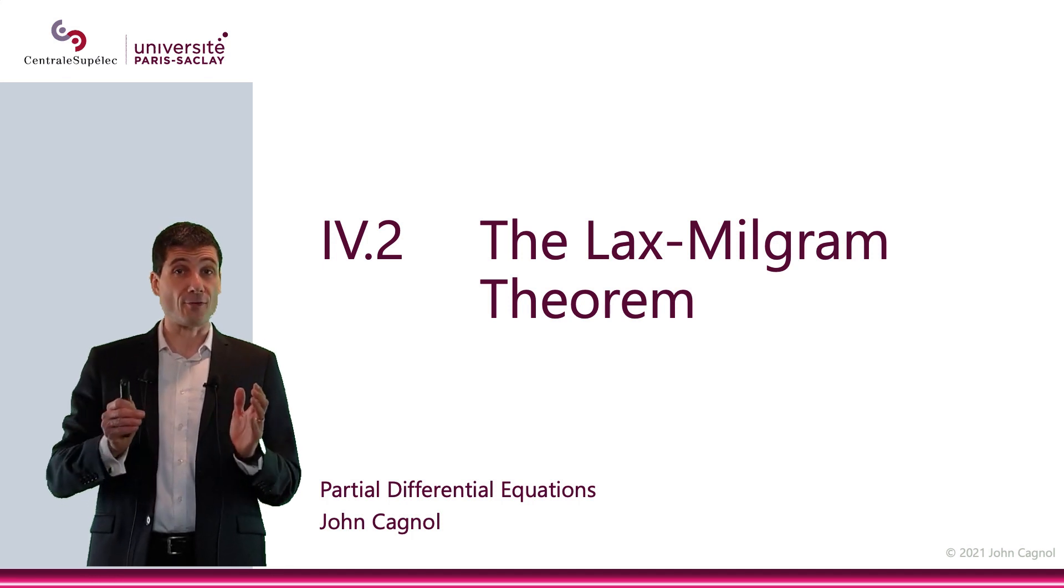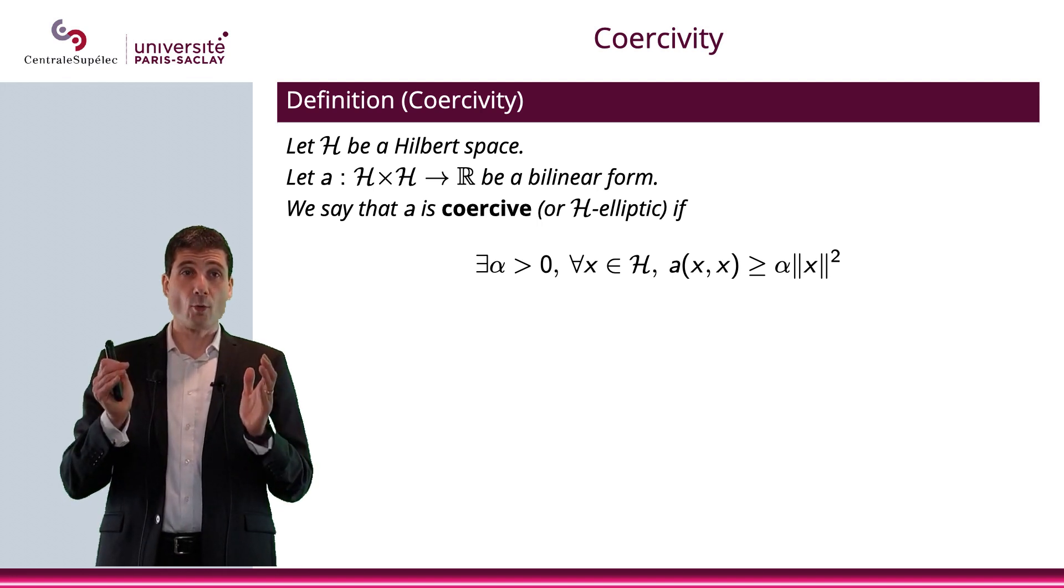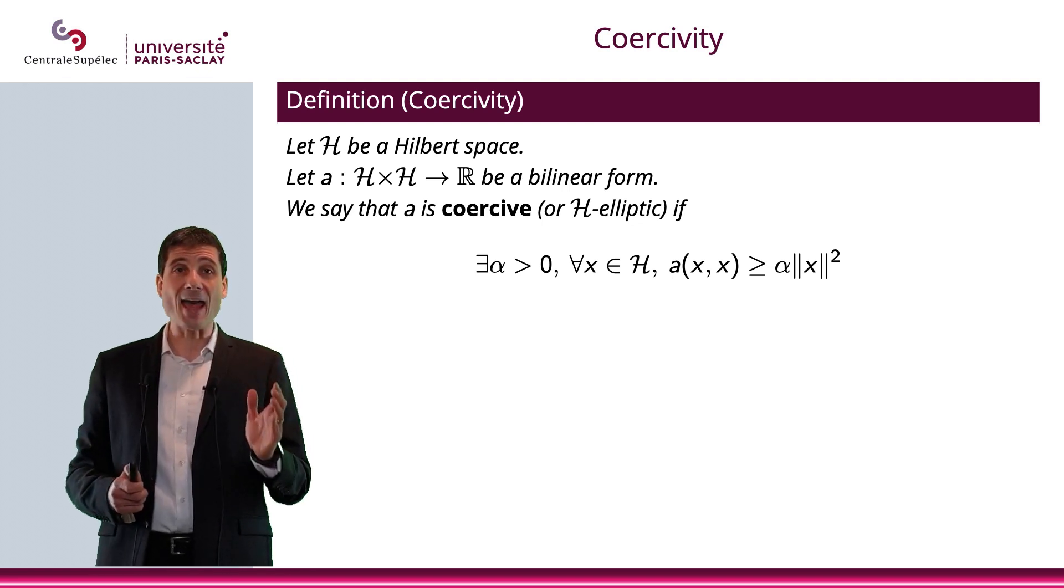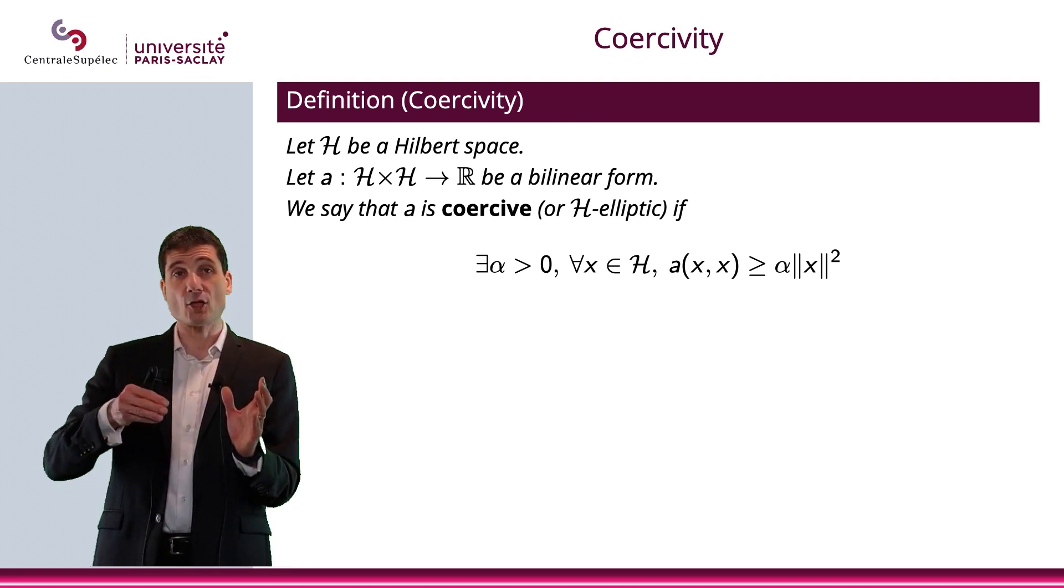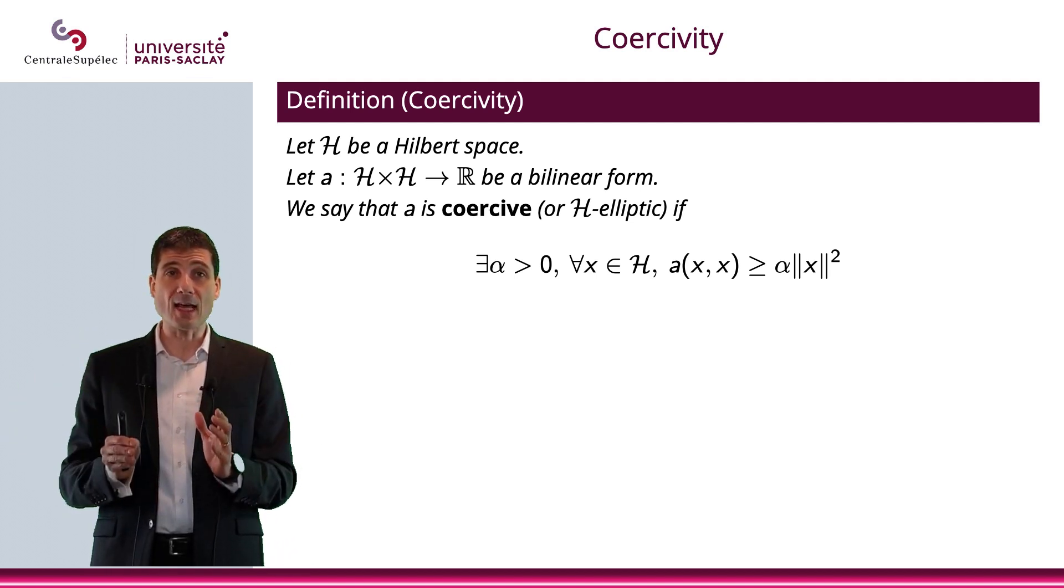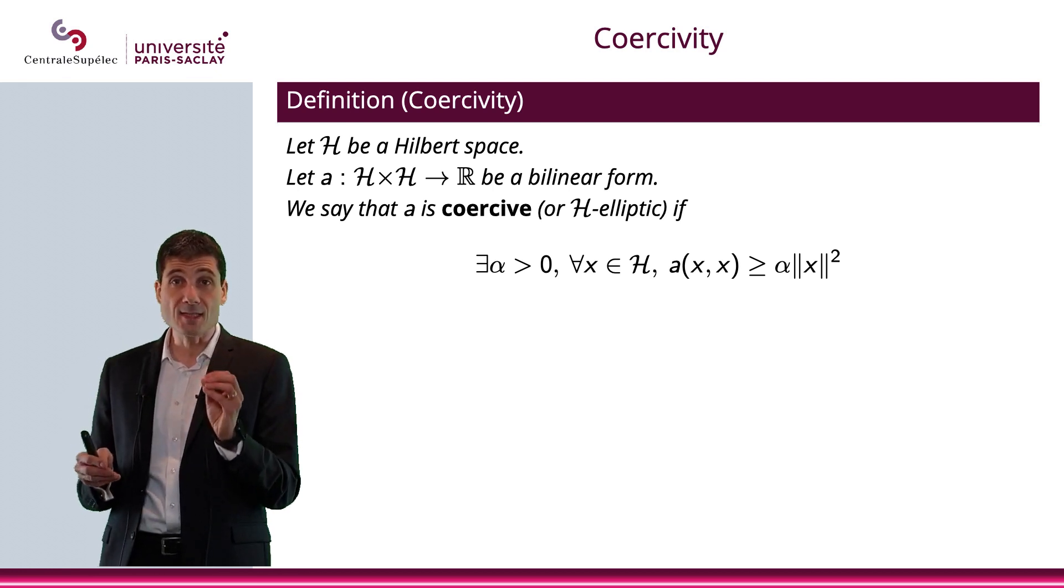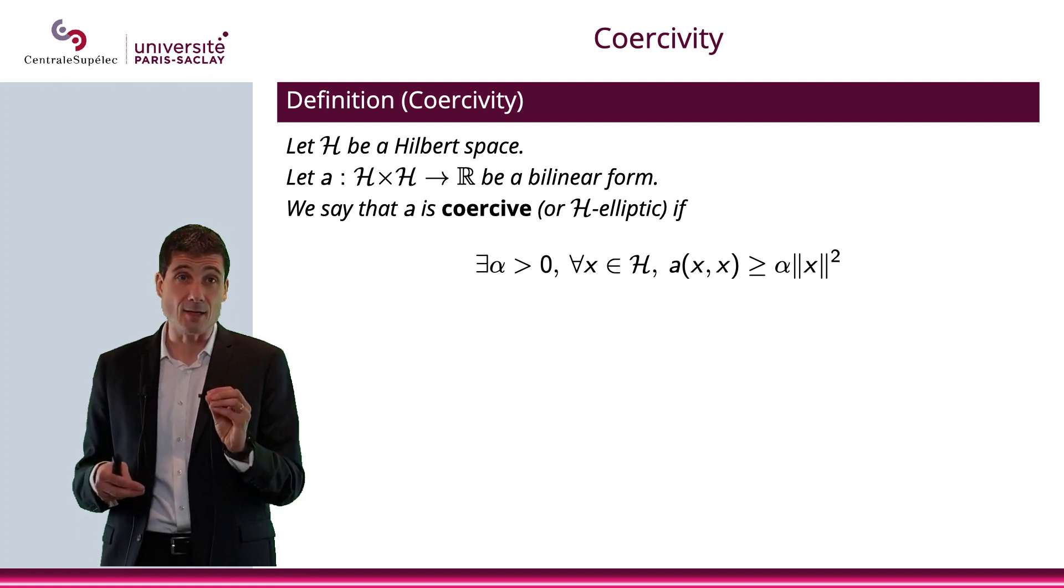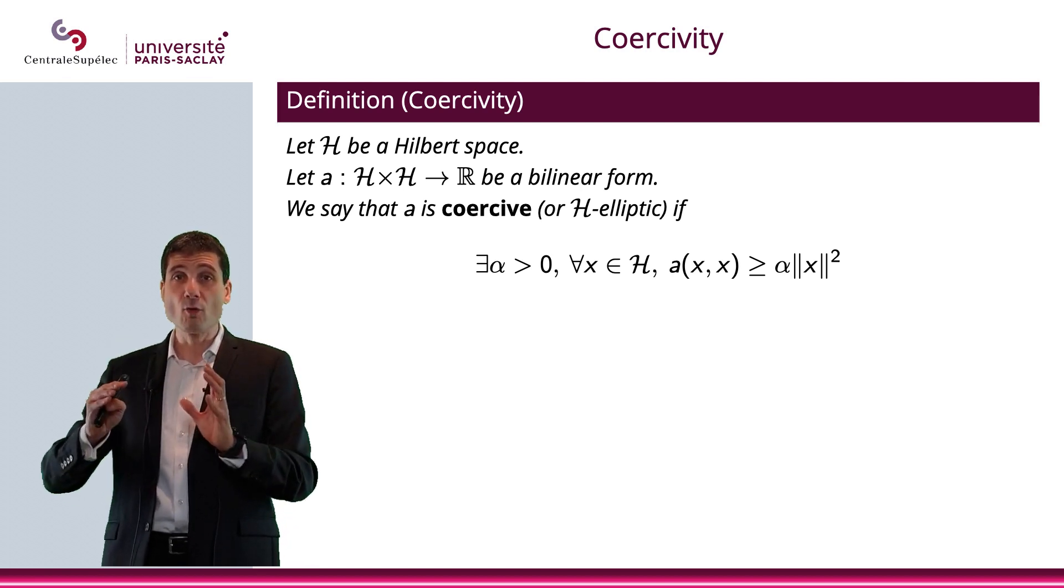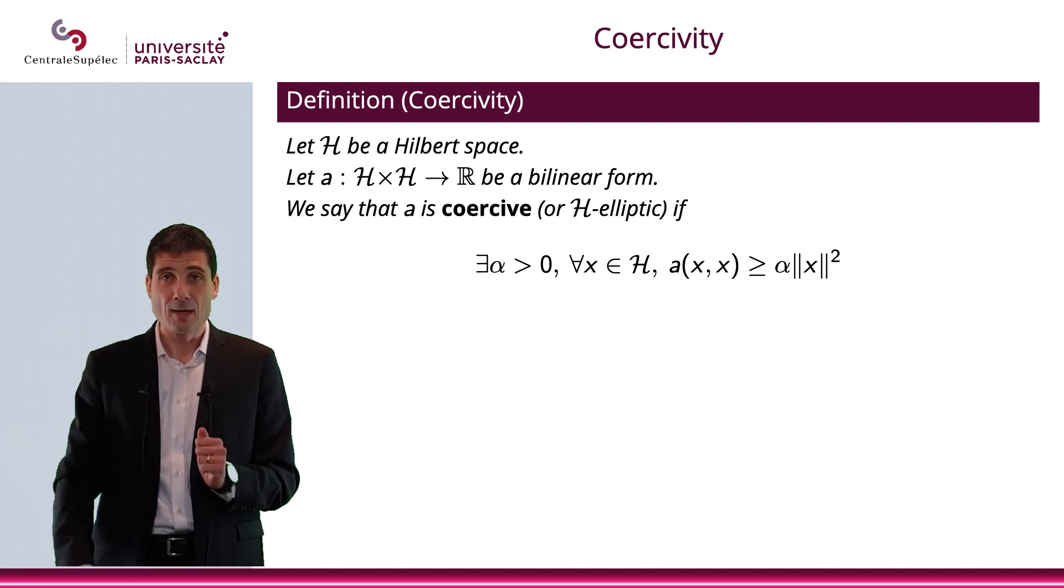Let me start with giving a definition, the definition of coercivity. We'll have a Hilbert space H, and let me take A, a bilinear form, from H times H to R. We will say that this bilinear form is coercive if there exists a constant α, which is strictly positive, such that for all x in H, A(x,x) will be greater than α times the norm of x squared.